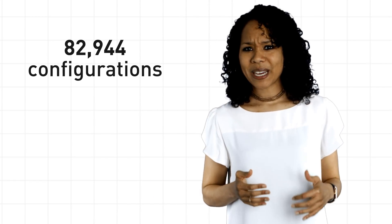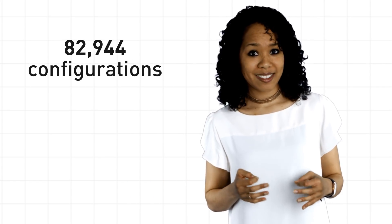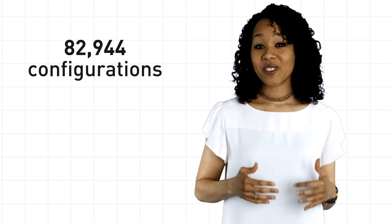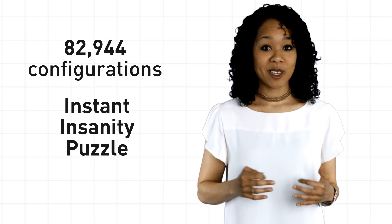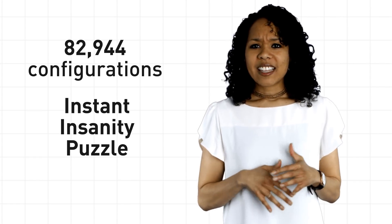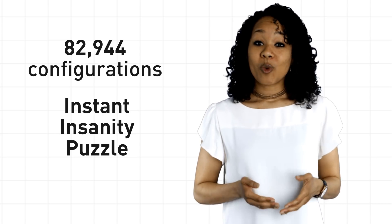Alright, there are thousands of different configurations that we can make with these cubes. 82,944 to be exact, which is why this is often called the instant insanity puzzle. So out of these thousands of possibilities, is there one that works? That is, is it possible to stack the cubes so that each color appears exactly once in the front, back, left, and right sides of the stack?